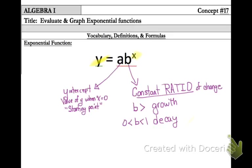Now, in exponential, this rate of change, if it is greater than 1, it represents growth. The graph starts out kind of slow and goes up pretty fast. If the rate of change, your b value, is less than 1, it goes down really fast and then levels out. That is called decay.